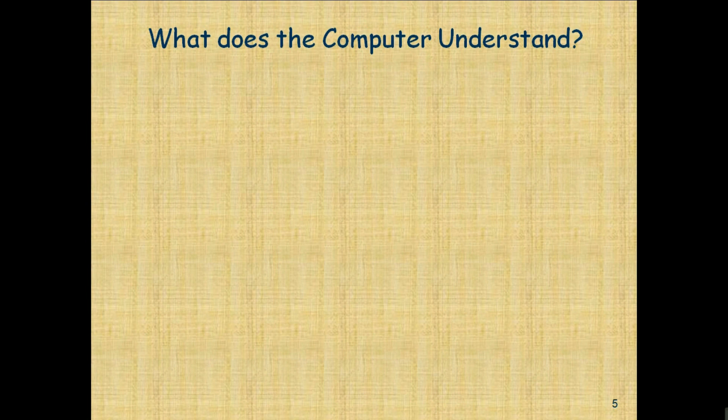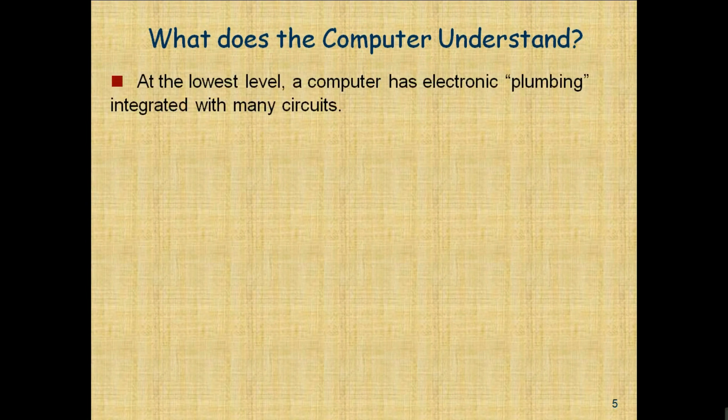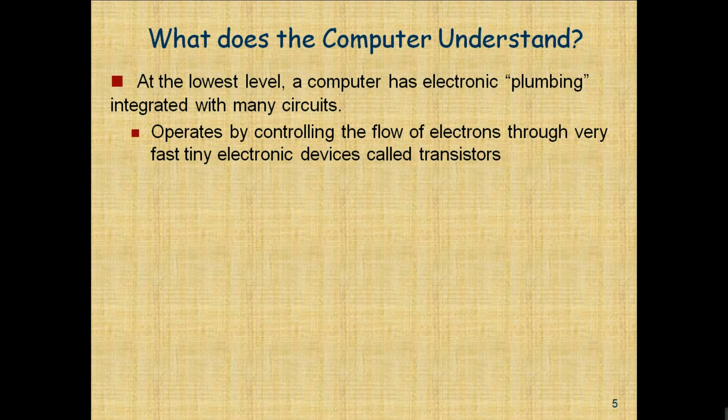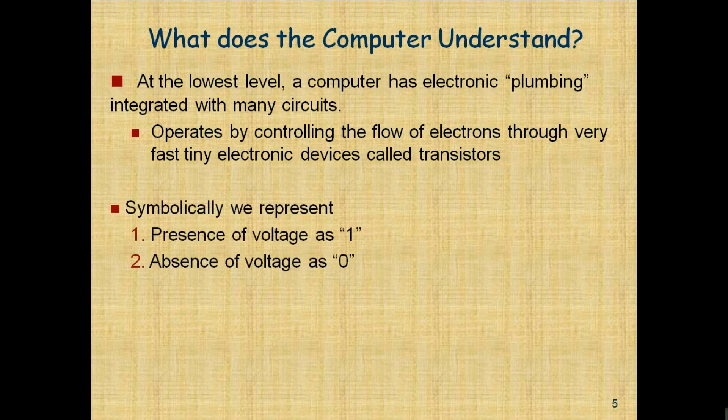What does the computer understand? At the lowest level, a computer has electronic plumbing integrated with many circuits. It operates by controlling the flow of electrons through very fast, tiny electronic devices called transistors.